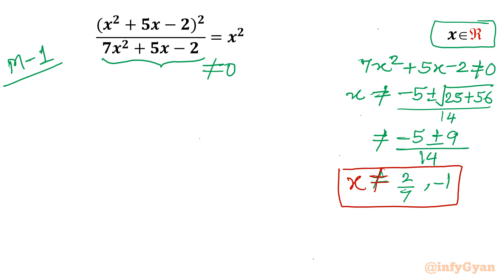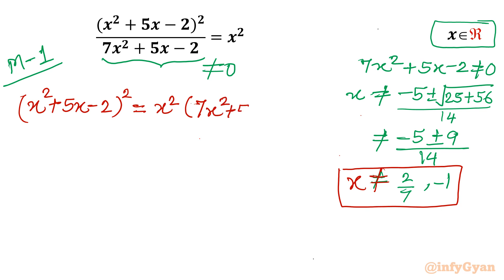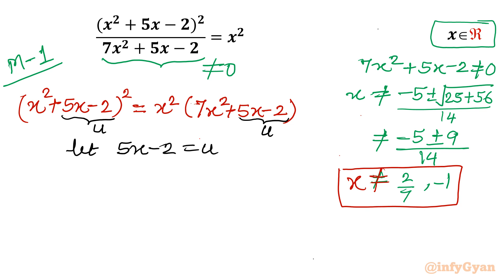Since the denominator is non-zero, we can cross multiply: (x² + 5x - 2)² = x²(7x² + 5x - 2). Now I will use substitution. Notice that 5x - 2 appears on both sides, so let u = 5x - 2. The equation becomes (x² + u)² = x²(7x² + u).